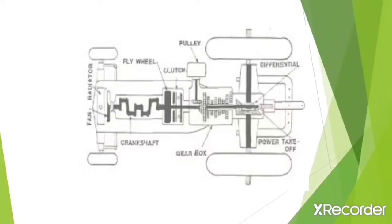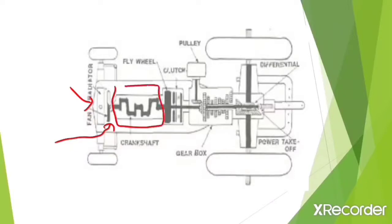This is the top view of the tractor. This part is the fan, then this is the radiator, and there is also a water cooling jacket — together this system is called the water cooling system. There are different systems present in the tractor, and you need to understand where they are actually located. After the cooling system there is the engine, which is present after the radiator and fan.